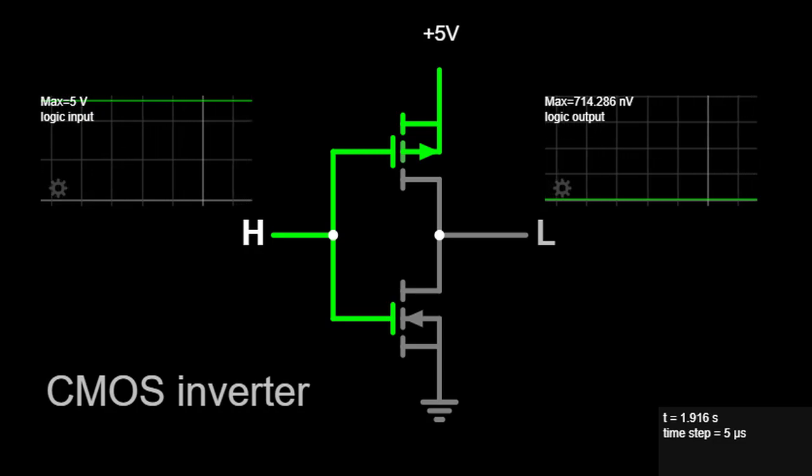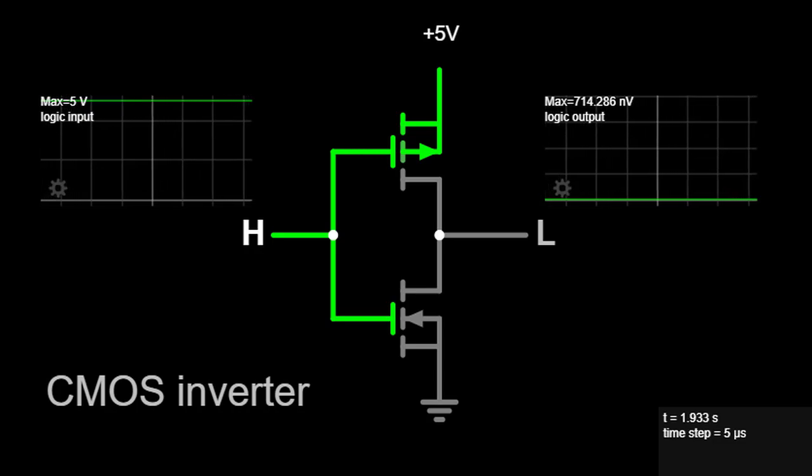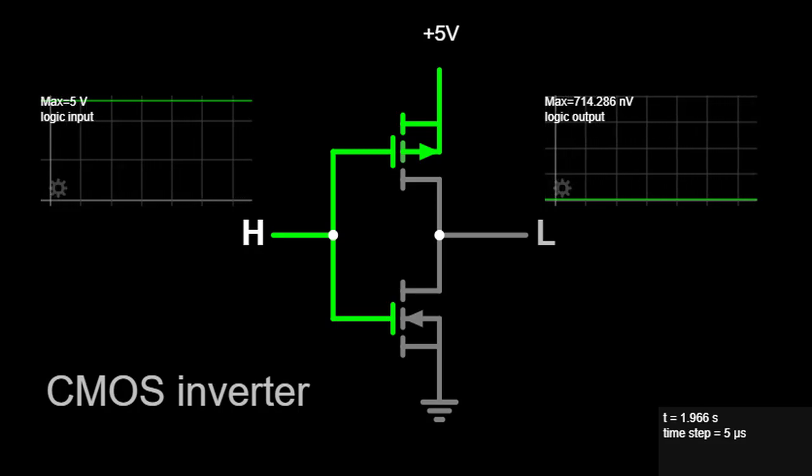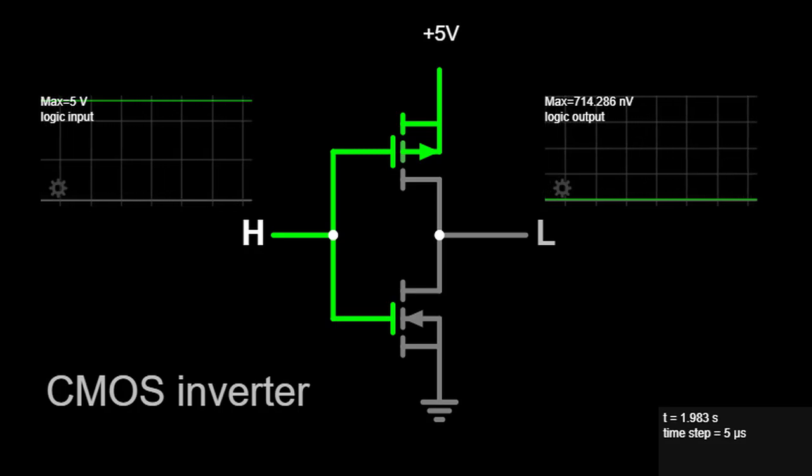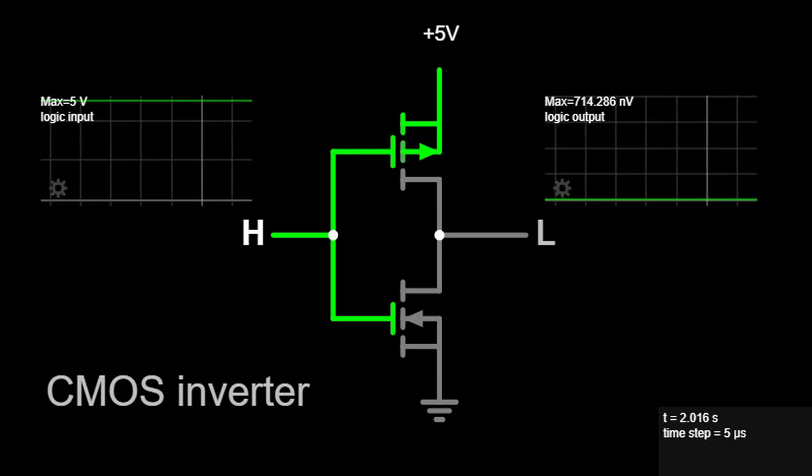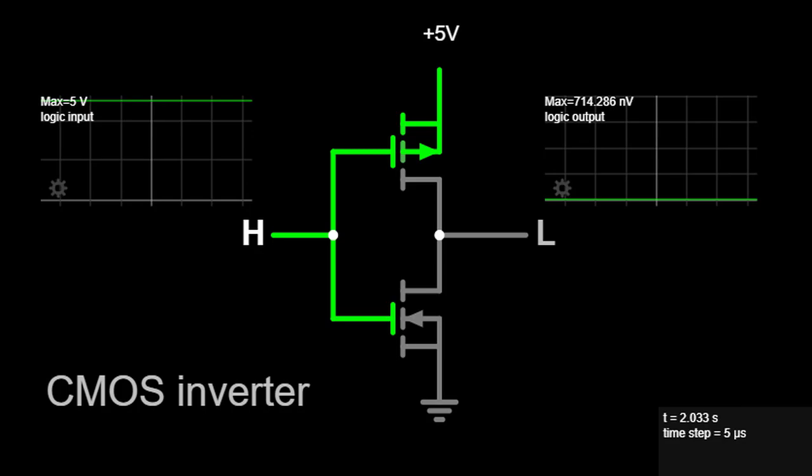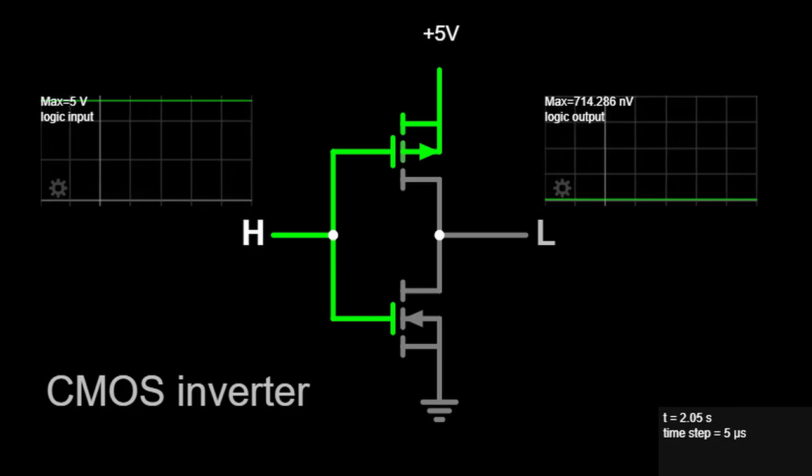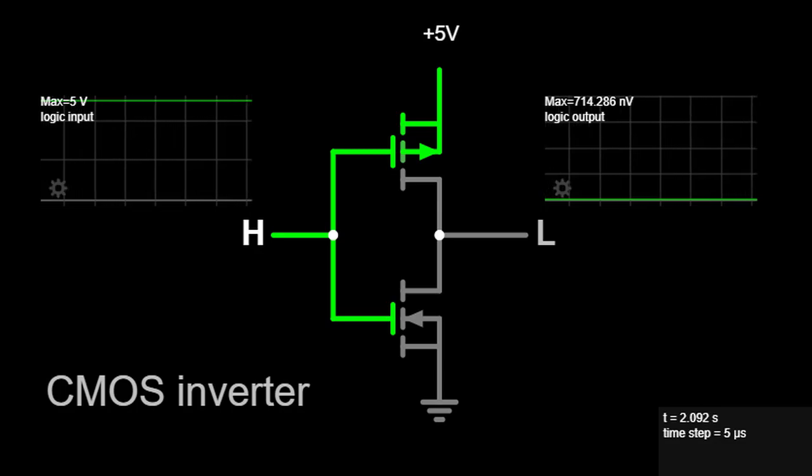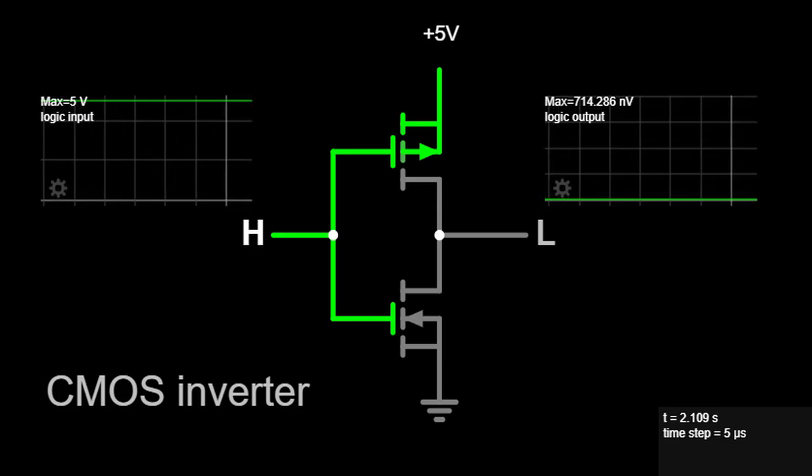2. High noise immunity - CMOS technology provides high noise immunity, making the circuits more resilient to external noise and disturbances. 3. Compatibility with modern semiconductor manufacturing - CMOS inverters can be seamlessly integrated into modern semiconductor manufacturing processes, enabling the development of complex integrated circuits with millions or even billions of transistors on a single chip.